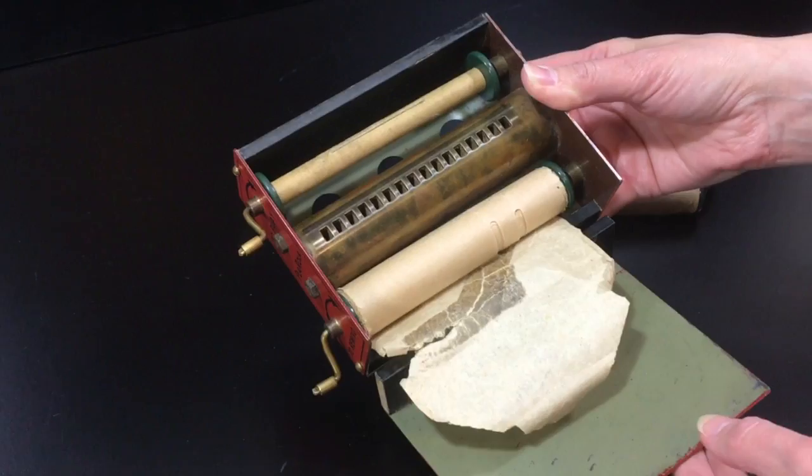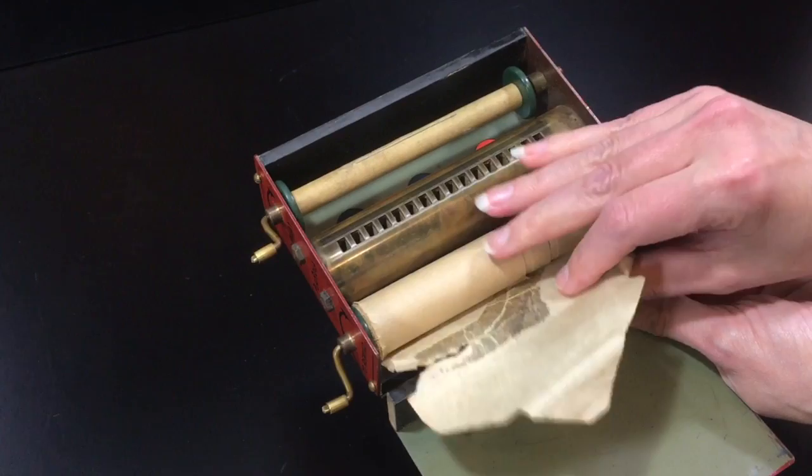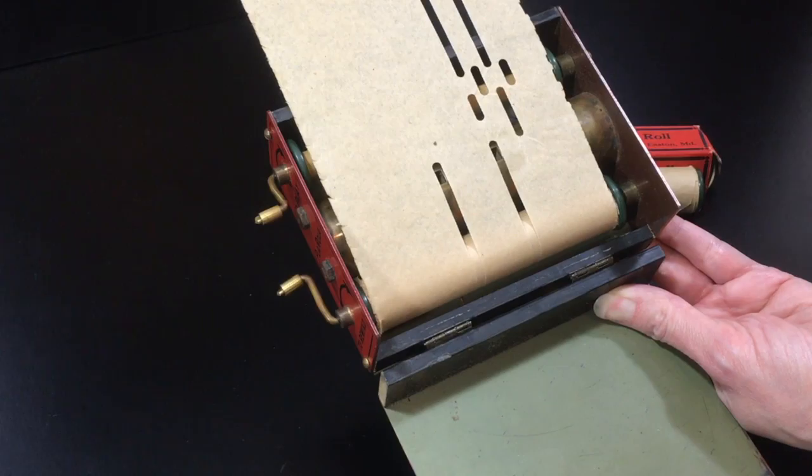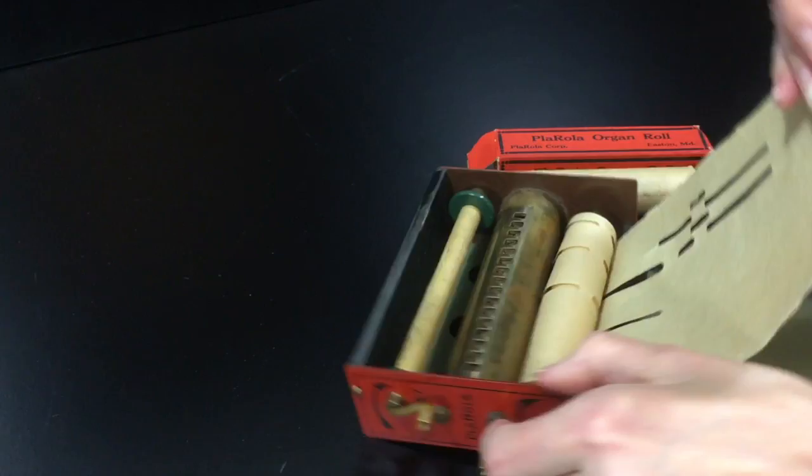But the way this works is the song roll covers up those holes. And then as you crank it, it has little slots in the paper that expose the right holes to produce the right note for the song. So we'll go ahead and roll this song into the instrument.